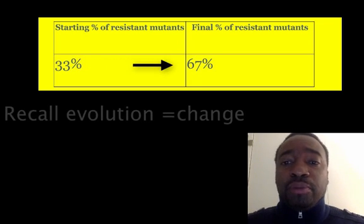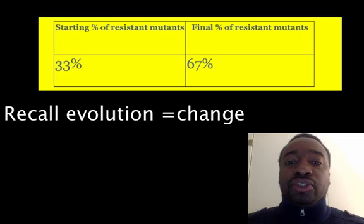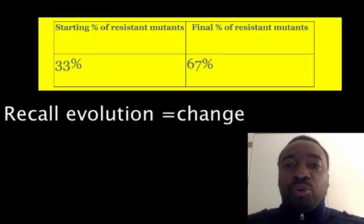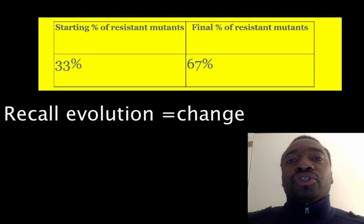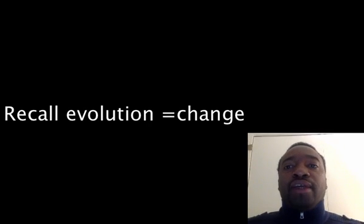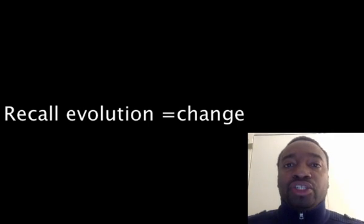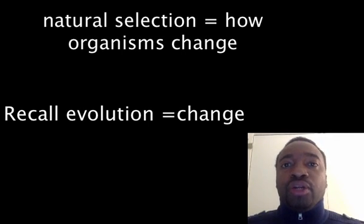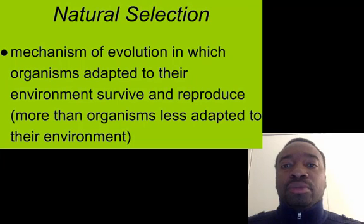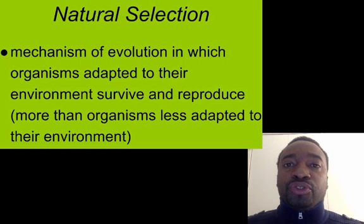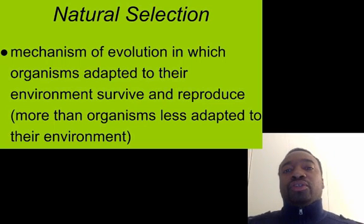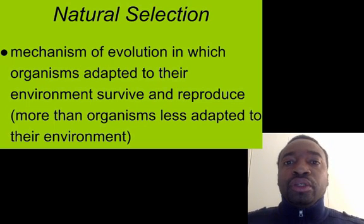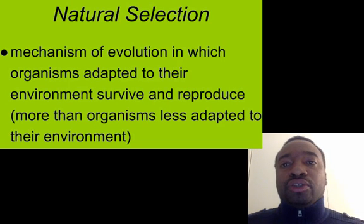From the initial population at 33% resistant to 67% resistant, we see a change in the population — and that in a nutshell is evolution: when the composition of a population changes. This is actually an example of what we call natural selection. Evolution specifies that there's a change in the population, and natural selection is one mechanism by which it changed. Let's go back to the fly example.